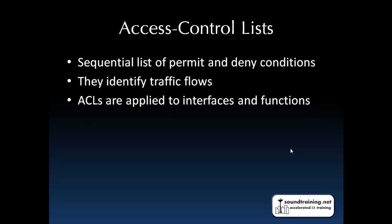First of all, what is an access control list? It's just a sequential list of permit and deny conditions. Each line has one permit or deny condition on it — I'm going to allow this type of traffic, I'm going to deny this type of traffic. They identify traffic flows, so each line is going to specify from this source to this destination, perhaps this type of protocol, this port number, something like that.